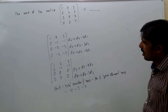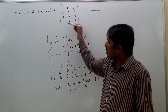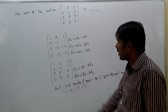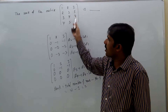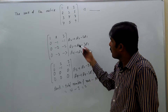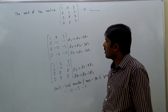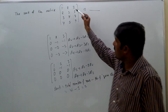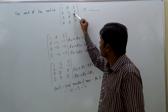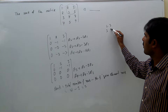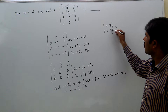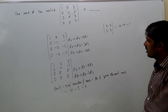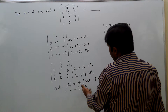Rank 2 means the highest order of non-zero determinant in this matrix is second order only. If you take any third-order determinant, it will become 0. But if you take a second-order determinant, at least one non-zero determinant will be there. For checking, take the 2×2 submatrix with elements 2, 3, 3, 5 — its determinant equals 10 minus 9 = 1, which is non-zero. So second-order non-zero exists, confirming rank 2.